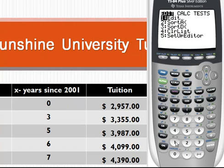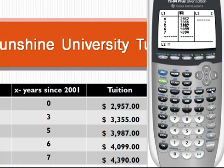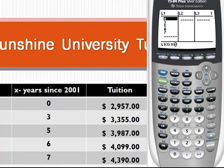We're going to press number one. You see I have different lists: L1, L2, L3. If you have any data inside your L1 and L2 lists, you want to clear that. Press the up arrow to highlight the list you want to clear, and then press the clear key. Then press enter. You'll see L2 is now clear. Using the arrow keys, highlight L1, press clear, and press enter.